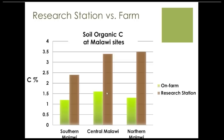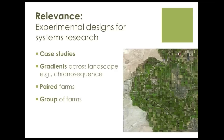Here's an example from my work in southern Africa. We have average carbon or organic matter from hundreds of on-farm fields near the experiment station at three locations in Malawi. At the southern site, the organic matter on the research station is about double what it is on farmers' fields, and it's even more so in northern Malawi. An experiment such as different types of conservation tillage might work well at high organic matter on the station but not under the real-world situation — a clear example of very different experiment station soil types compared to on-farm.